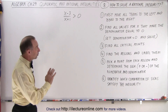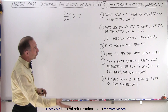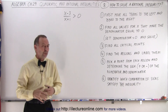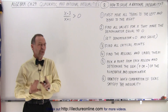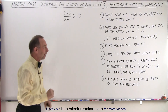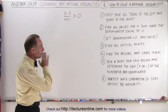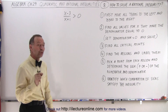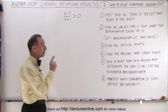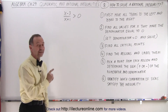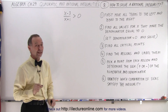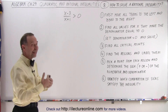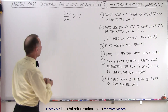First, we're supposed to move all the terms to the left side and zero to the right, but we are already there, so we don't have to worry about that. Step number one is already done for us. The next step we do need to do is find all the values for x that make the denominator equal to zero, by taking the denominator and setting it equal to zero.